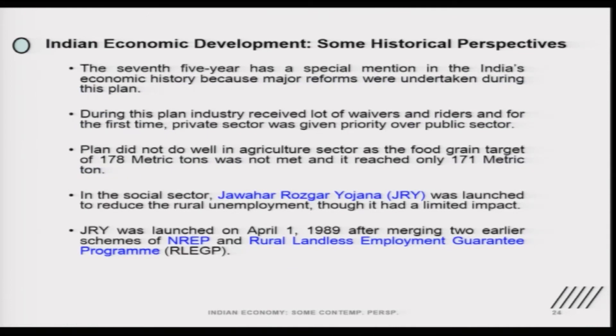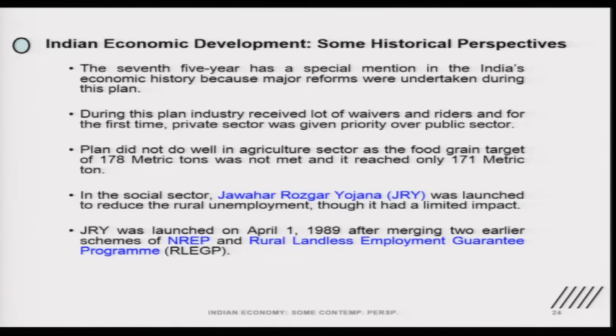The 7th Five Year Plan also had great importance in terms of giving more priority to the private sector. For the first time, the Government of India gave more priority to the private sector compared to the public sector, because public sector was becoming a big liability on the exchequer. In a phased manner, there was de-radicalization of the public sector's role in economic development. In terms of agriculture, the plan did not fully achieve its target — the government procured around 171 metric tons of food grains against a target of 178 metric tons.